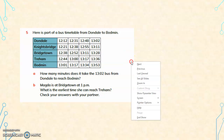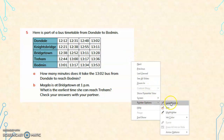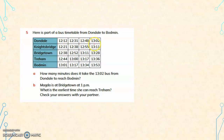In the timetable, look for the 13:02 bus. You can see in the timetable the last time — this is when the bus starts at 13:02 from the station. What time does it reach Bodmin?